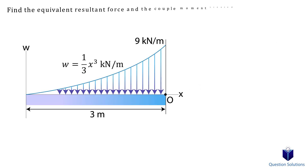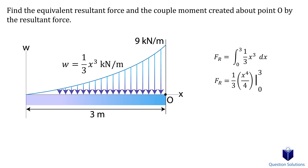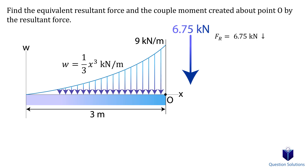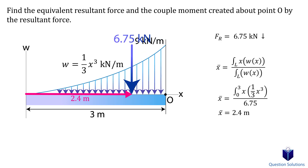Now we're going to look at an example where the distributed load is shown to us with an equation. In a problem like this, the resultant force is the integral of the equation given to us. The lower bound would be where the distributive force starts, which is at 0 meters, and the upper bound is where it ends — at 3 meters. Solving the integral gives us the resultant force, and since the distributive force was downwards, our resultant force is also downwards. Now we need to find where our resultant force is going to be placed, so we use the X-bar equation. On top, we have x times the equation given for the distributive load, with the same upper and lower bounds. On the bottom, we have the same integral as before, which is the resultant force. Solving gives us 2.4 meters — this is measured from the left side, and that's where we place our resultant force.